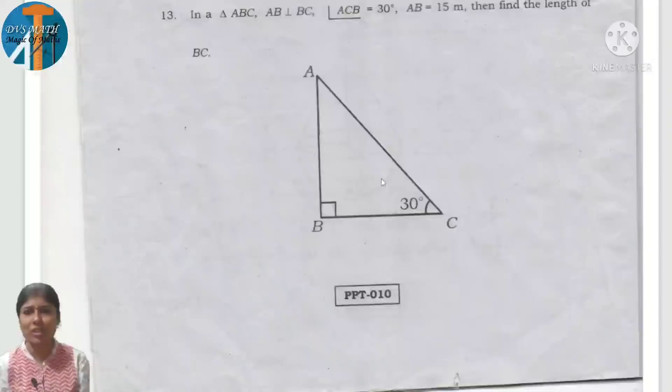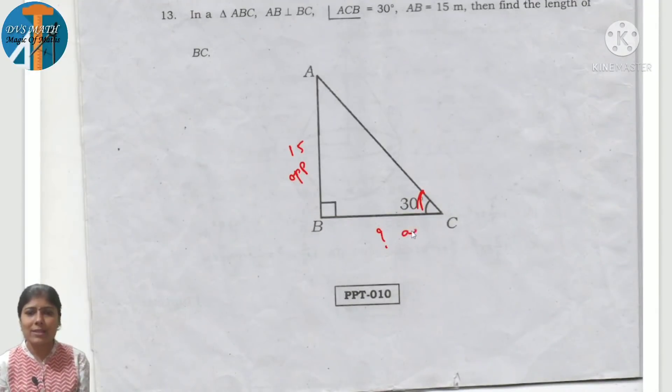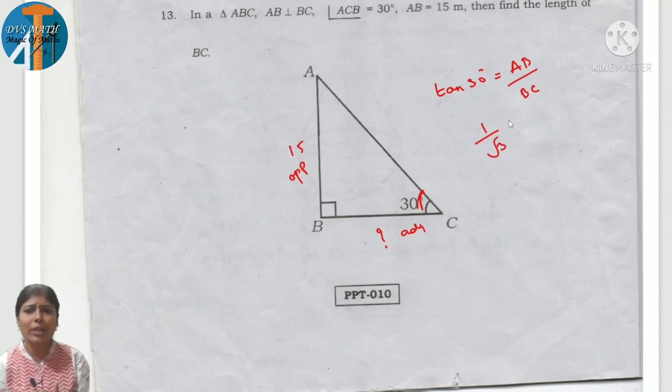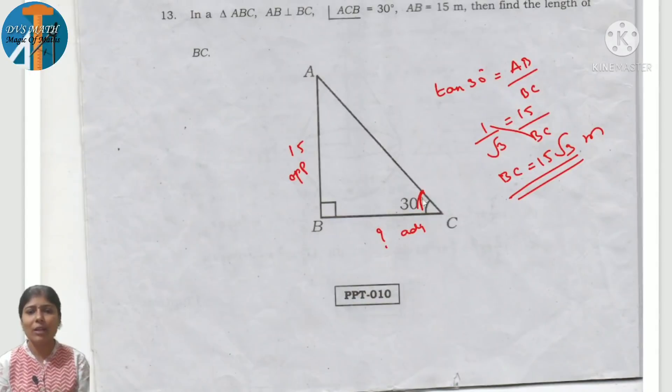Application of trigonometry. AB is 15, find the length of BC. This is theta, opposite side is AB, adjacent side is BC. Opposite to adjacent, we use tan. Tan 30 degrees equal to opposite AB over adjacent BC. What is tan 30? 1 by root 3. Cross multiply: BC into 1 equals 15 root 3. BC equals 15 root 3 meter. Very simple.